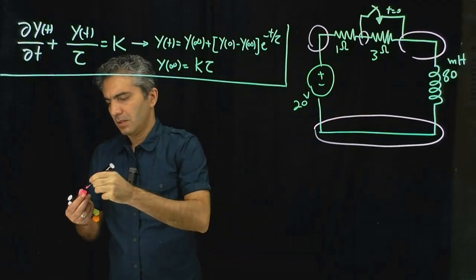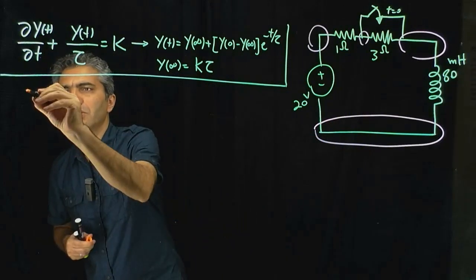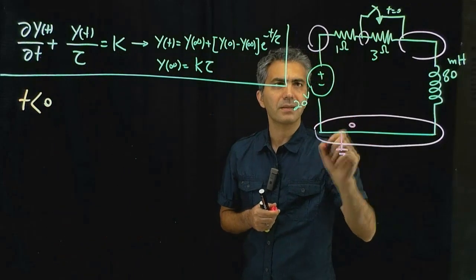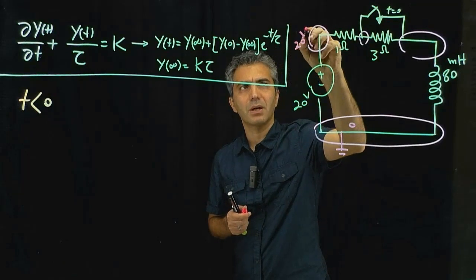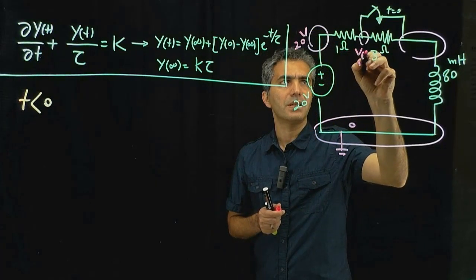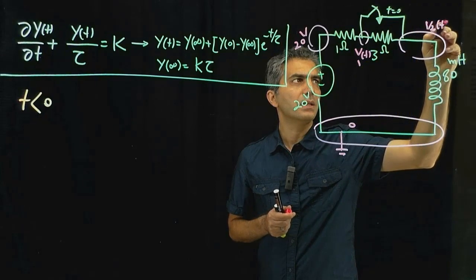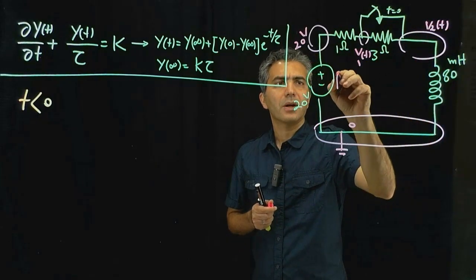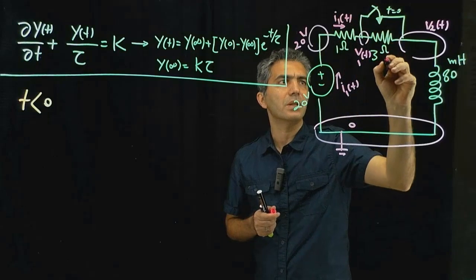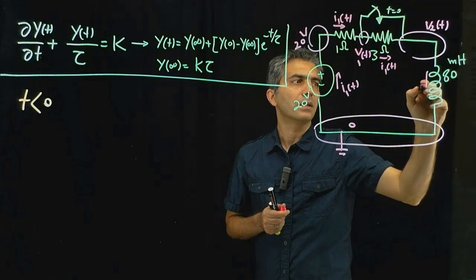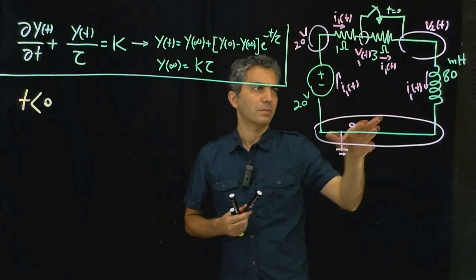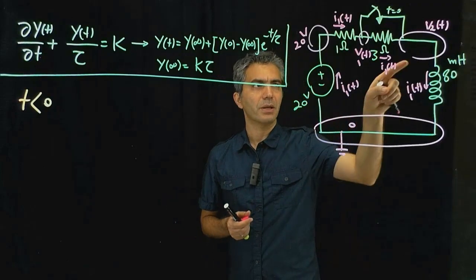Before the switch, T less than zero: that's our ground. I can write the equation for this component — this immediately becomes 20 volts. I'll call this V1(t) and this one V2(t). The current here I'll call I1(t), and the current passing through all of these components is I1(t). All the components, nodes, and currents are now labeled.